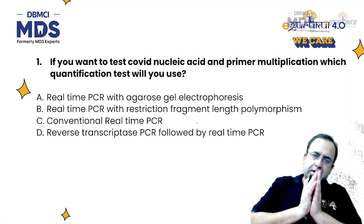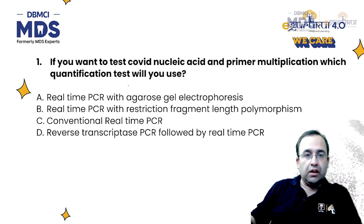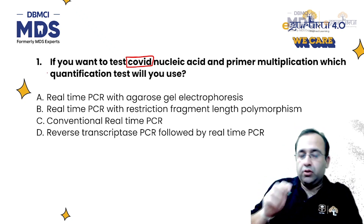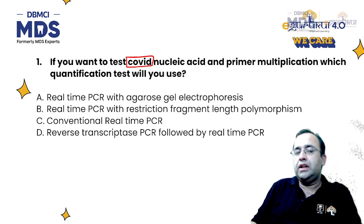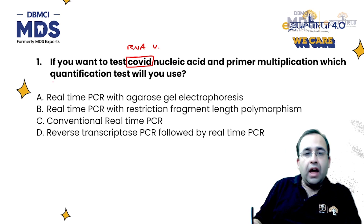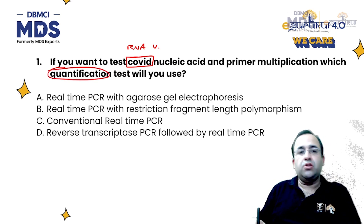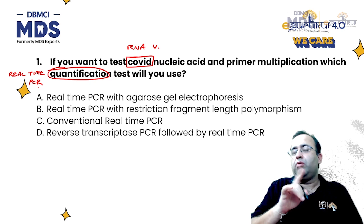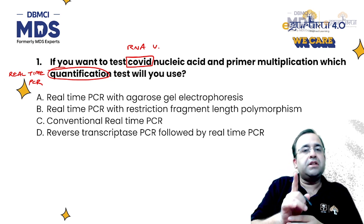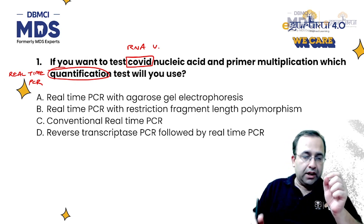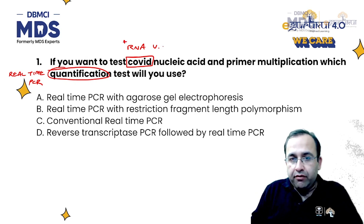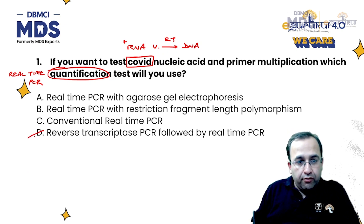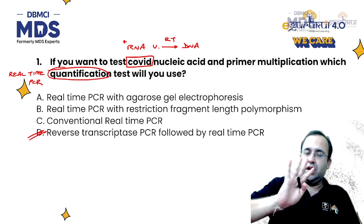First, let us start with our first question on COVID-19. If you want to test COVID nucleic acid and primer multiplication, which quantification test will you use? There are two hints: it is a COVID test, and COVID virus is an RNA virus. The examiner is asking which quantification test to use. Quantification test is real-time PCR. I cannot quantify by RT-PCR — RT is reverse transcriptase. I can only quantify by real-time PCR. So first, I have to convert this RNA to DNA by reverse transcriptase PCR, followed by quantification by real-time PCR. So the answer was option 4.